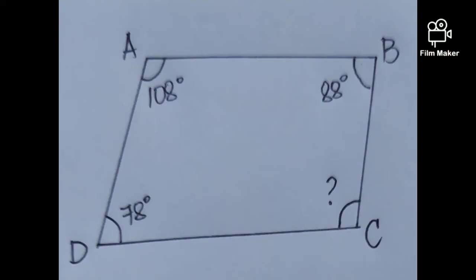We have the measure of angle A, which is 108 degrees. Angle B is 88 degrees. Angle C is unknown, and angle D is 78 degrees.